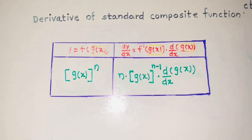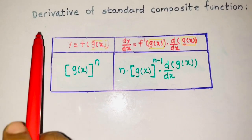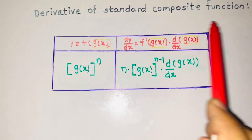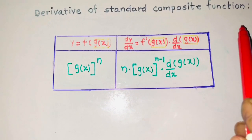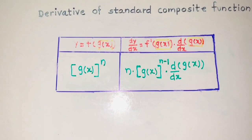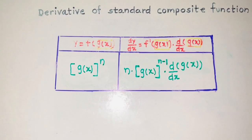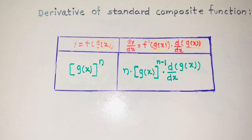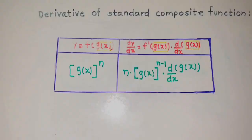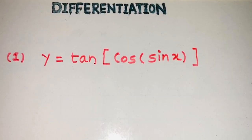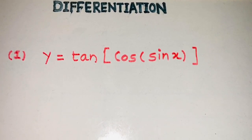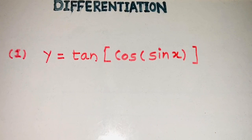These are the 10 formulas of the derivative of standard composite functions. Now we are going to solve some questions based on composite functions. First question: y is equal to tan of cos of sin x.